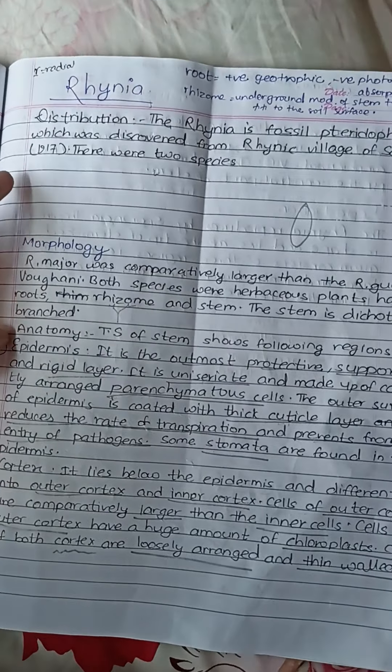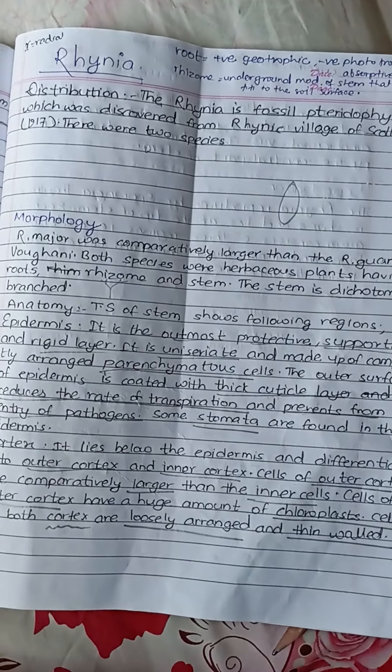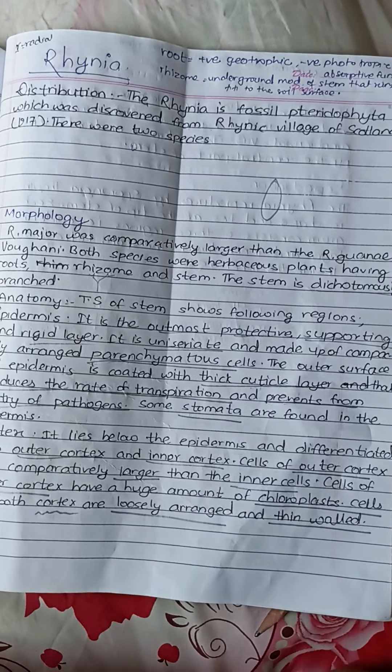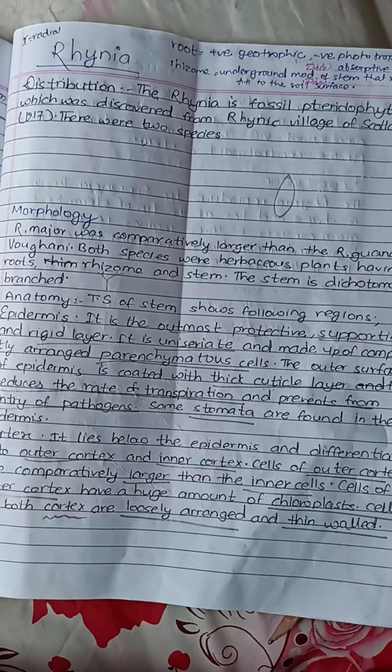Doraemon welcomes you back. So Rhinia is a very rapid revision. Rhinia is a fossil pteridophyte, discovered in Scotland. It's called Rhinia, and we can do it as a species.